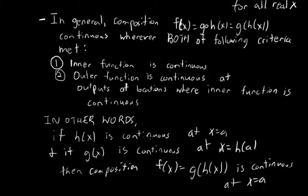then the composition f of x equals g of h of x is continuous at x equals a. We need to know the inner function is continuous at a, and the outer function is continuous at h applied to where the inner function is continuous.